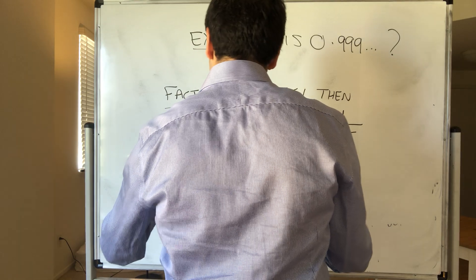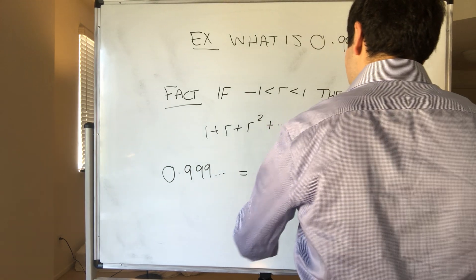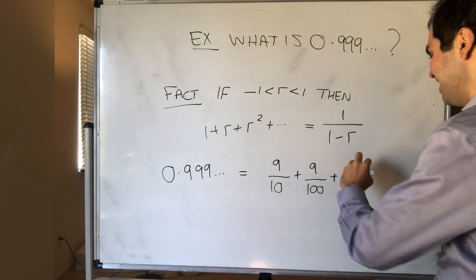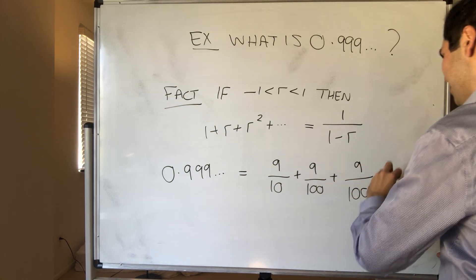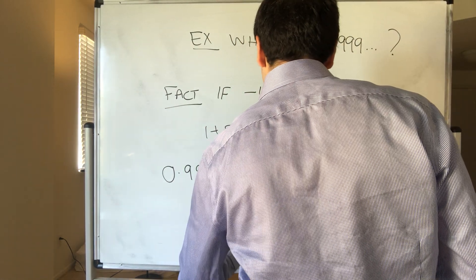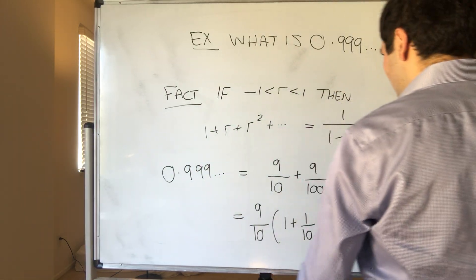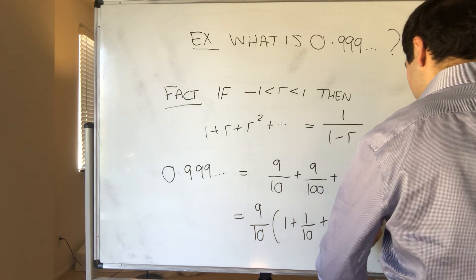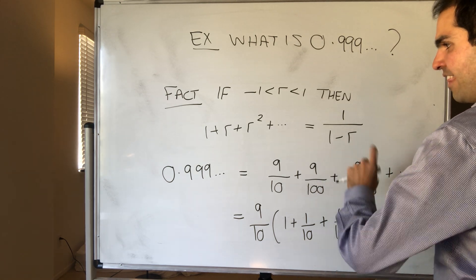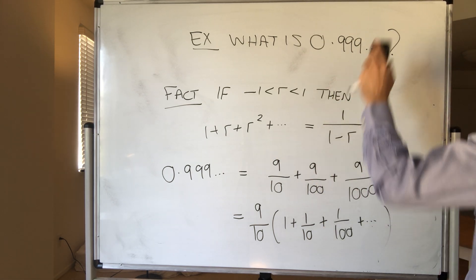And again, you can show this, but more importantly, how do we apply this to this example? Well, 0.999, well, by definition, that's just 9 tenths plus 9 over 100, plus 9 over 1000, plus dot dot dot, and really what this is, is 9 tenths times 1 plus 1 tenth, plus 1 hundredth, plus dot dot dot, and it's really 1 plus 1 tenth, plus 1 tenth squared, plus 1 tenth to the third power, so it's really this thing, but with r equals 1 tenth.